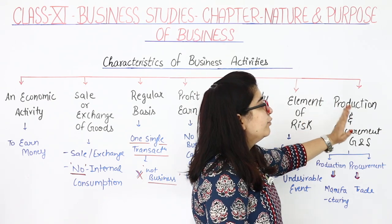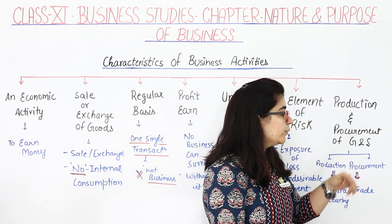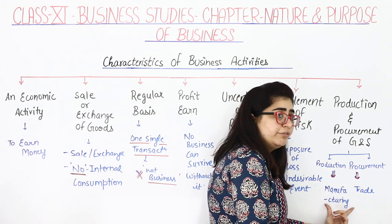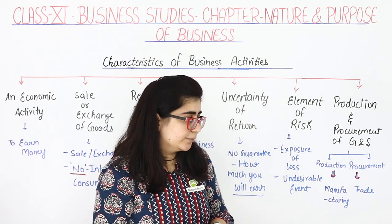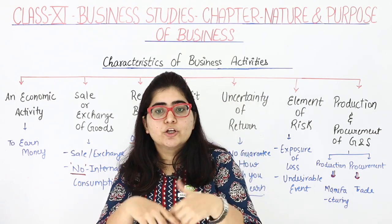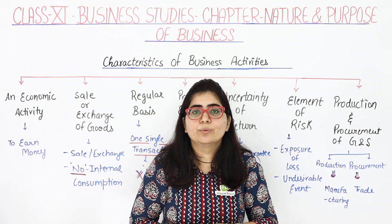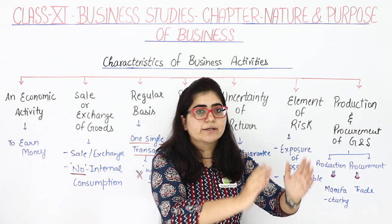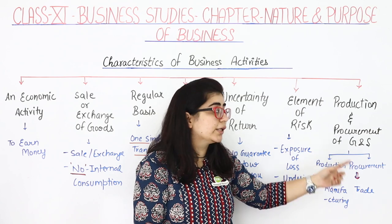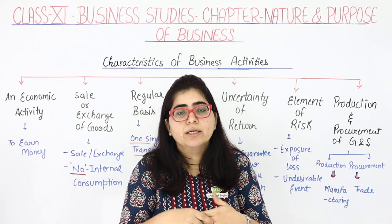Last characteristic is production and procurement of goods and services. I mentioned two words: production and procurement. Under production I have written manufacturing, and under procurement I have written trade. To understand production and manufacturing: say I bought raw materials — flour, sugar, and chocolate — and using an oven I converted them into cookies. Here I am producing; I am converting raw materials into finished products. That is production. So when we do production, we are doing manufacturing. This way you can do business by converting raw materials into finished products yourself.